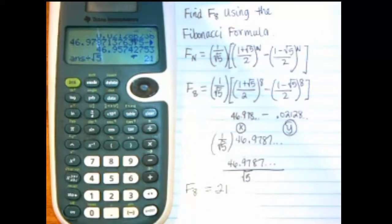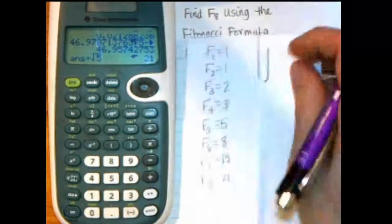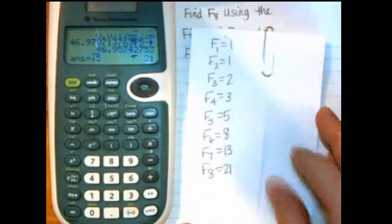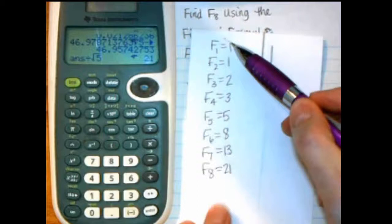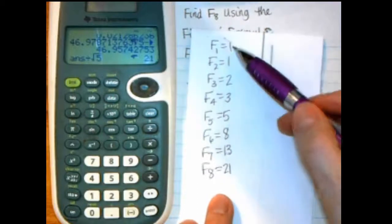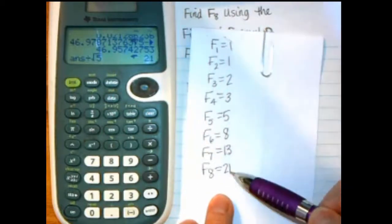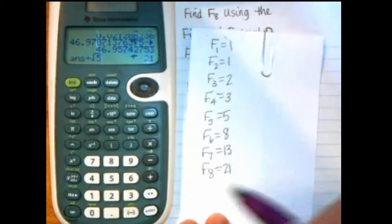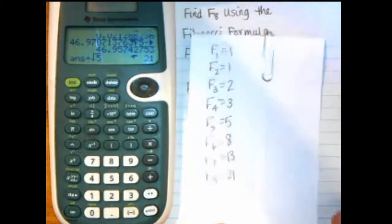And I can double check that. I wrote out the Fibonacci numbers here. So the first is 1, the second is 1. So it was 1, 1, 2, 3, 5, 8, 13, 21. And F sub 8 is 21. So I can verify that one.